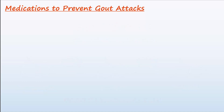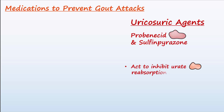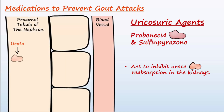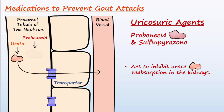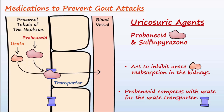Another category used to prevent gout attacks are the uricosuric agents. Medications in this category include probenecid and sulfinpyrazone. These medications act to inhibit urate reabsorption in the kidneys. In the proximal tubule of the nephron, urate is reabsorbed back into the blood by a specific urate transporter. Probenecid acts to compete with urate for this transporter, thus blocking urate reabsorption and increasing the excretion of urate into the urine, which lowers the amount of urate in the blood.